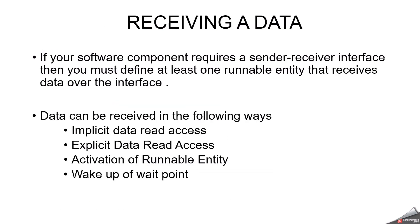Now, receiving data. We have seen how we can send data in sender receiver communication — explicit, implicit, using data send points or data write access. Now we are going to discuss about receiving data. If your software component requires a sender receiver interface, you must define at least one runnable entity that receives data over the interface. Data can be received in the following ways: implicit data read access, explicit data read access, activation of runnable entity, or wake up of wait point.